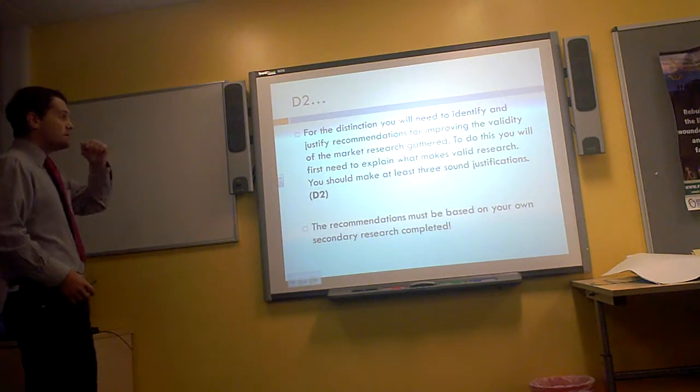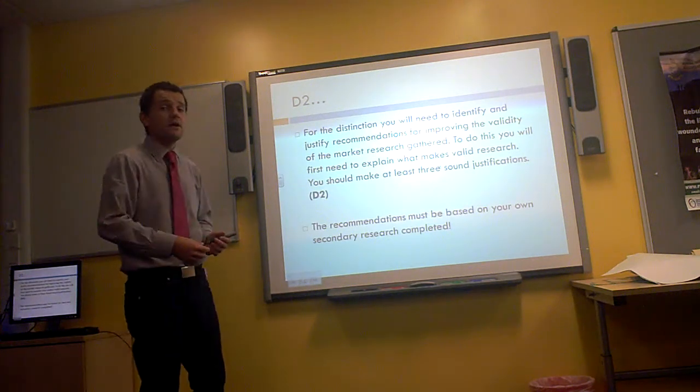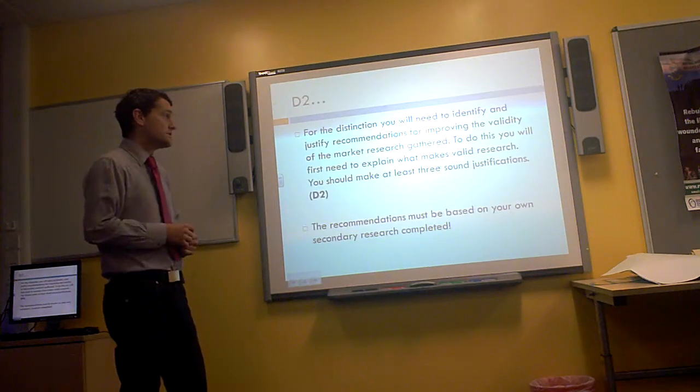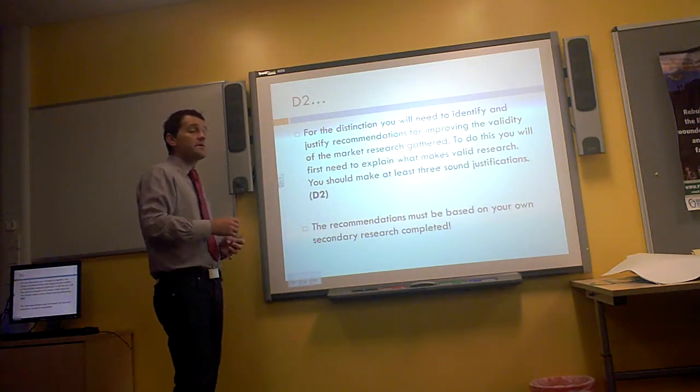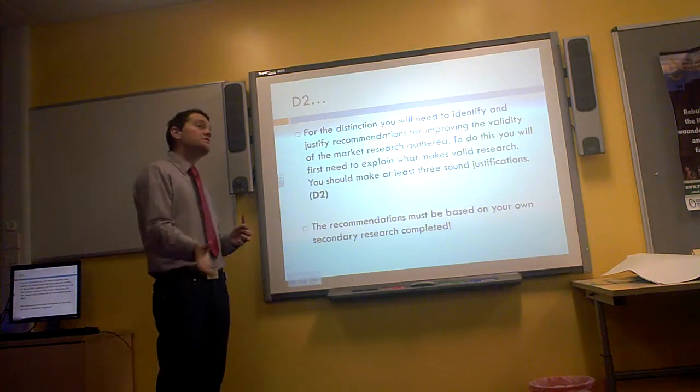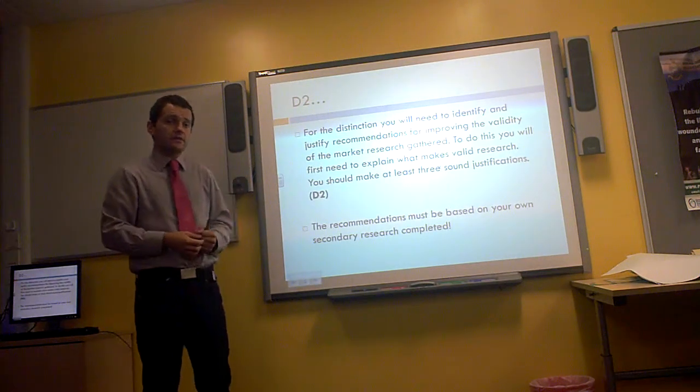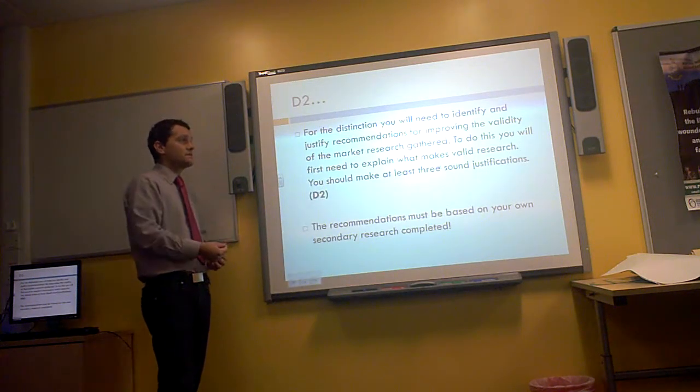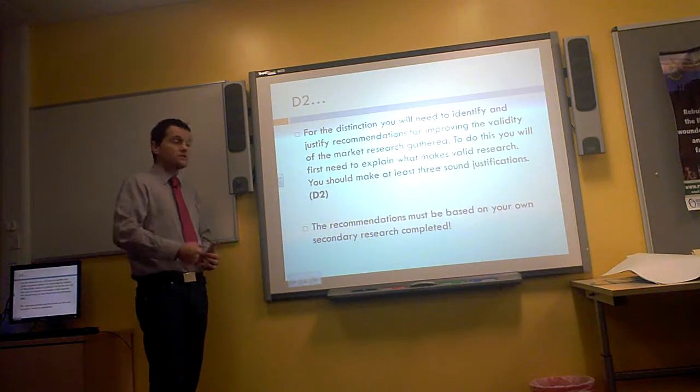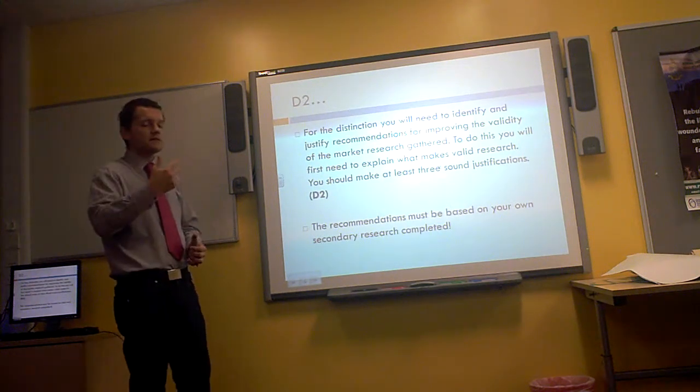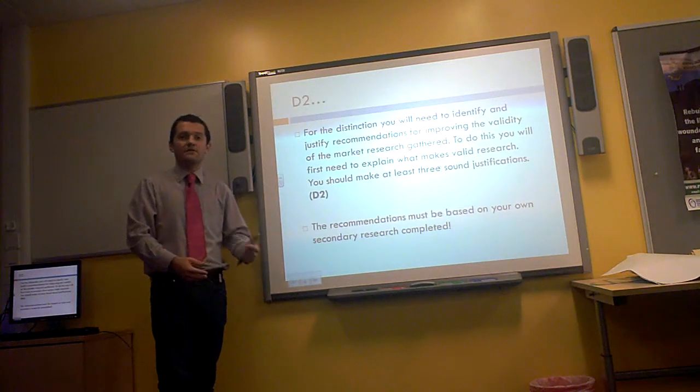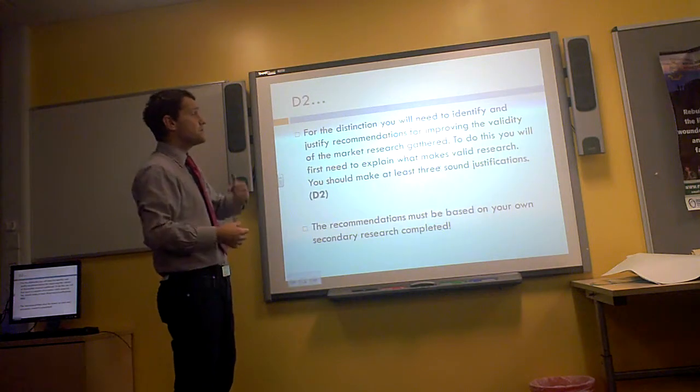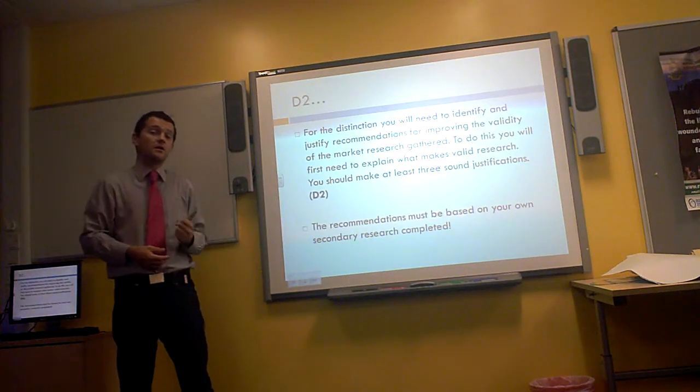Because in D2, you need to identify and justify recommendations for improving the validity of the market research gathered by Highbury College. So here you can see it says to do this, you need to explain what makes valid research. Now you should have done quite a lot of that as part of the M2 criteria. So it should be a natural progression for you to move onto and make recommendations. Thinking about range, scope, sample size, accessibility, validity, reliability, relevance, accessibility, all those things that you've identified, maybe as part of M2, can filter into your recommendation for improving the validity of the research at Highbury.